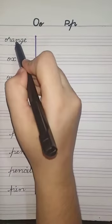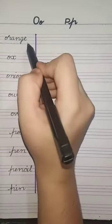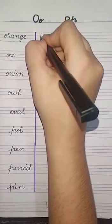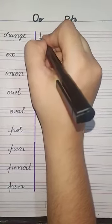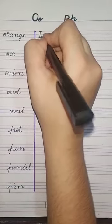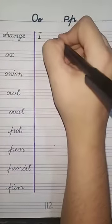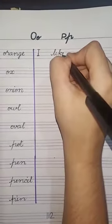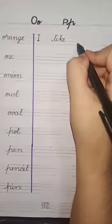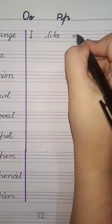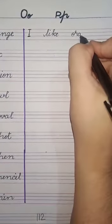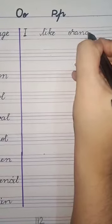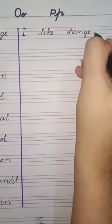First word is Orange. Orange hootah hai Malta. Hum iska sentence banayenge: I like orange. First you would write capital I in the first three lines. One finger gap. Write 'like' - L-I-K-E. One finger gap. Write orange: O-R-A-N-G-E. Orange. And last, full stop.